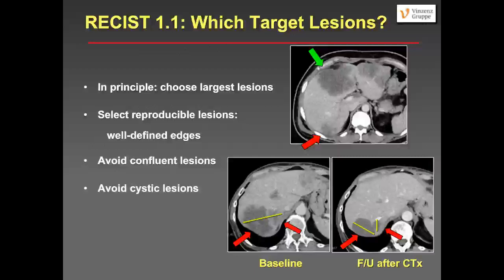Is it difficult to choose the appropriate target lesions? You should observe certain rules. In principle, choose the largest lesions, but the main issue is to select reproducible lesions with well-defined edges. The green arrow points to a very large lesion with well-defined margins — a good target. The posterior lesion indicated by the red arrow is not well-defined, making it difficult to measure with high inter-individual variability. Second important point: avoid confluence lesions. If you measure a confluence lesion from two previous smaller lesions, after chemotherapy these two lesions may split, making measurement difficult.